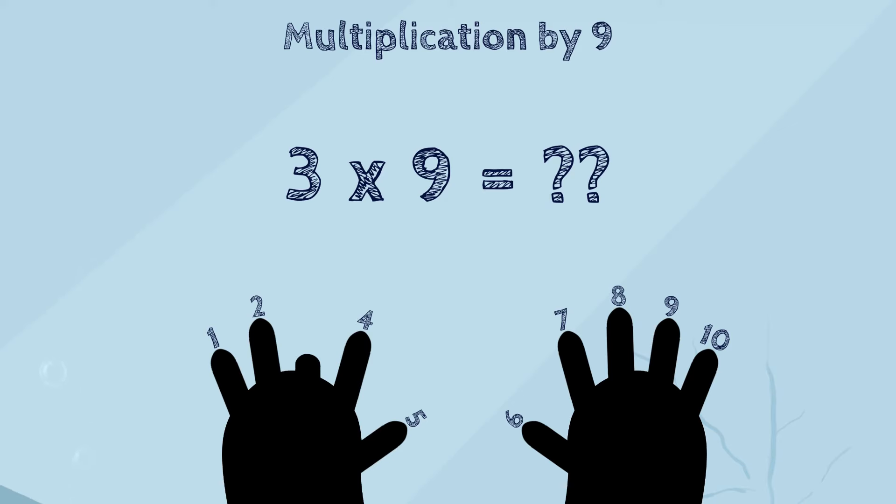Now, let's count the number of fingers to the left of the folded finger. That will be the first digit in the answer. In this case, we have 2 fingers to the left of the folded finger. So, we put 2 in the tens place for the answer.